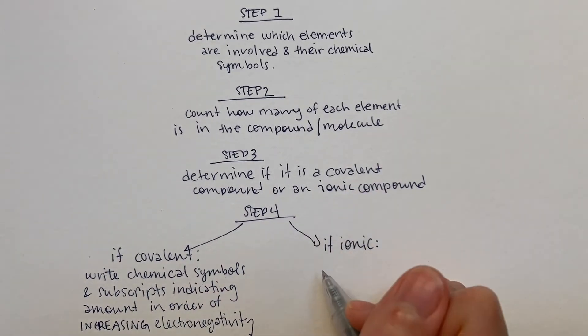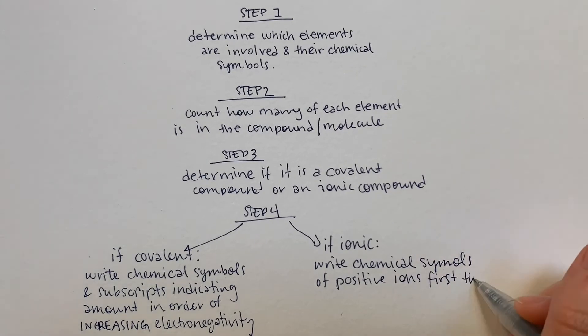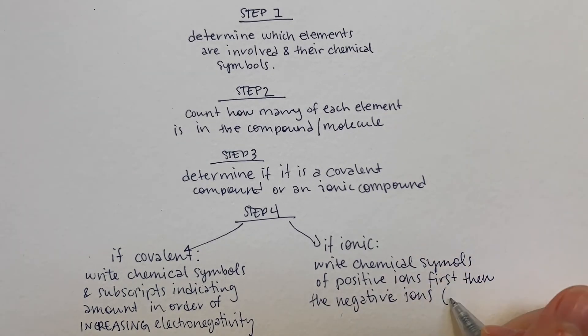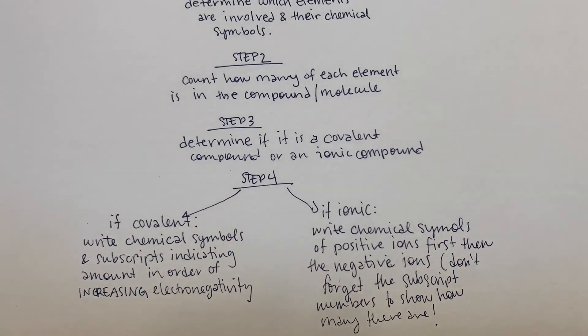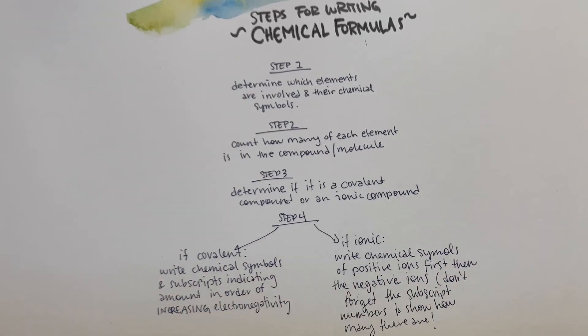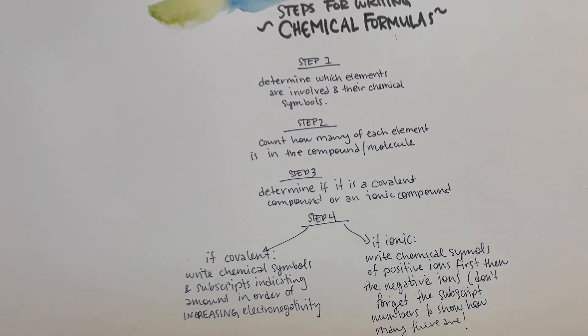Step 4: If ionic, write those chemical symbols in the order of positive ions first, followed by the negative ions, making sure to include the subscript numbers that represent that lowest whole number ratio of the elements in that compound.